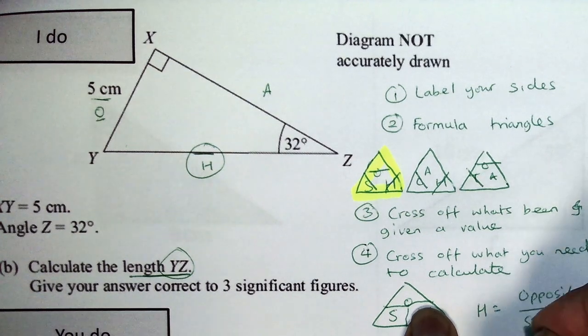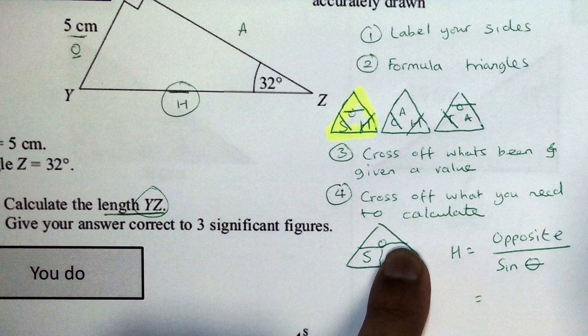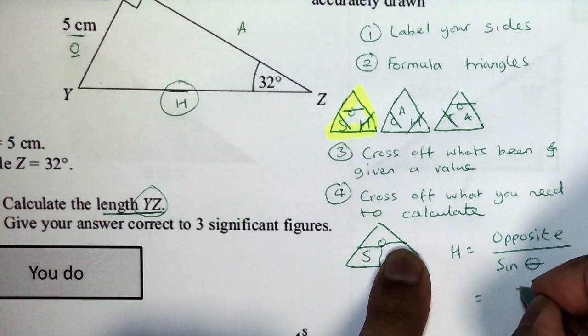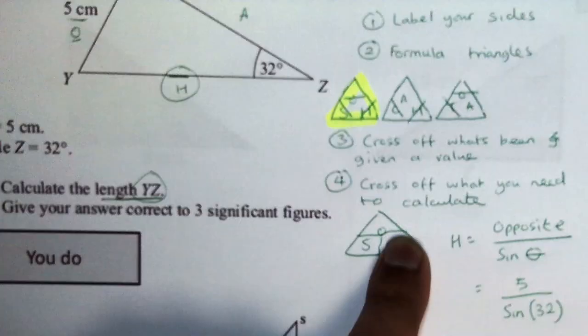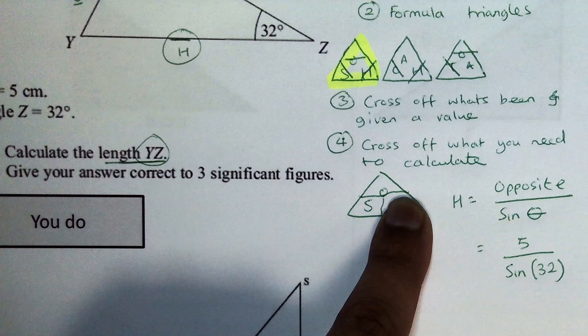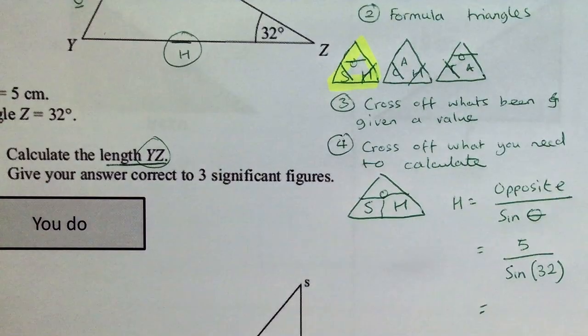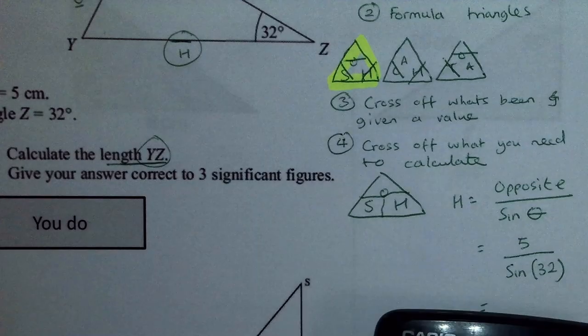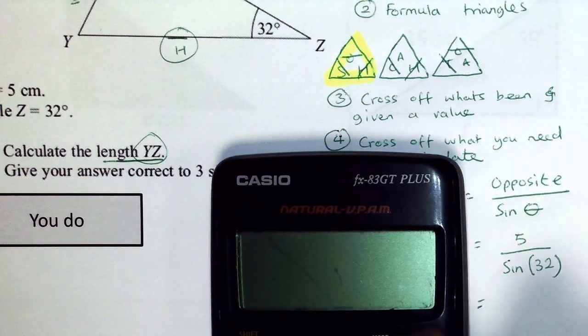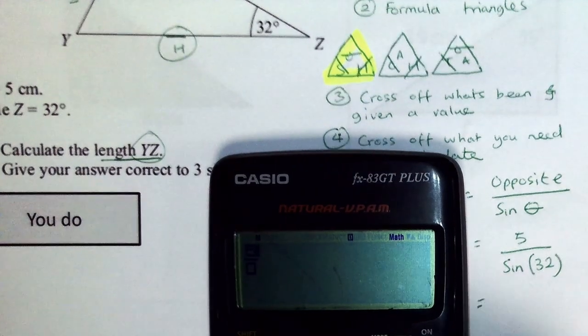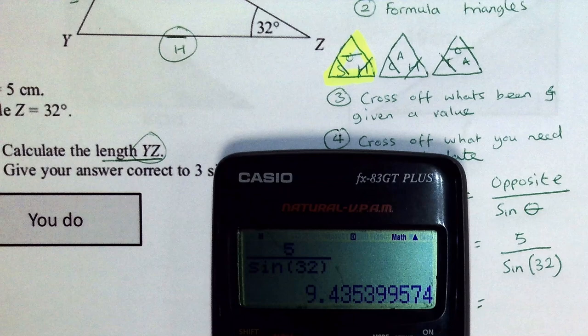So I can write out the formula: H is equal to opposite divided by sine theta. So let's plug the values in. So the opposite is five centimeters and divided by sine theta which is 32 which is the angle, so remember you need to close the brackets when you're using the calculator. So let's pop them values into the calculator. So all I'm doing is I can use the fraction button or I can do it as a division also. So 5 divided by sine 32, close my brackets and there's my answer.